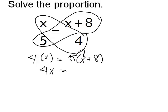Now I'm going to take 5 times everything in the parentheses. So I have 5x plus 40, because 5 times 8 is 40. Now I want to solve for x. So I'm going to subtract 5x from both sides.